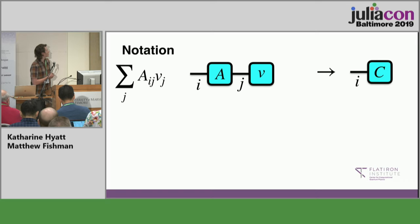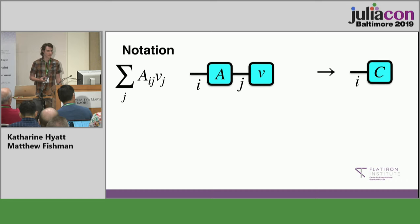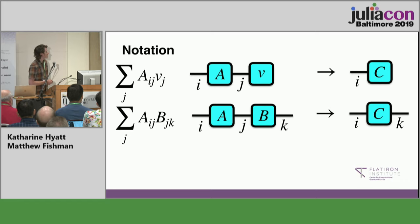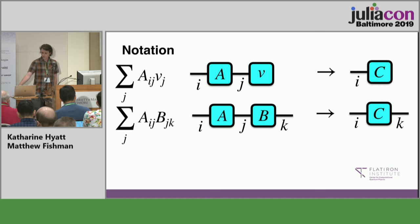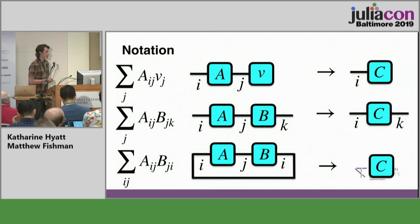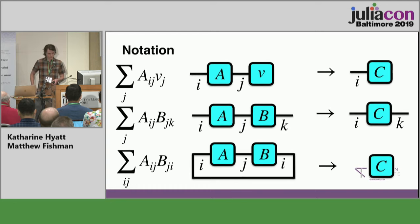Using this notation, we can represent linear algebra and multilinear algebra in a very compact way. For example, matrix-vector multiplication with Einstein summation notation can be represented diagrammatically — if a line is connected, it means we sum over that particular index. The single line of the vector connected to one line of the matrix means we sum over that index and get a result vector. Matrix multiplication can be written similarly, summing over a single index to get another matrix. A trace would have both lines of the matrix connected and summed over, giving a scalar — an order zero tensor.